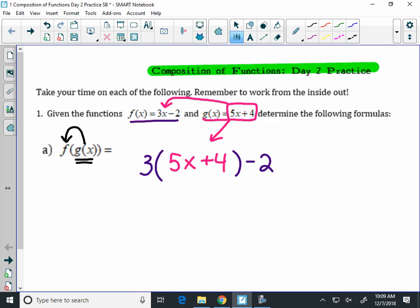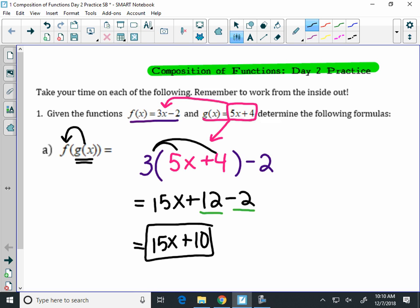Now all you have to do from here is simplify the expression by distributing the 3 to give you 15x plus 12, minus 2, and then combining like terms. This simplifies to 15x plus 10. And that is your final answer. That is the new equation you get from f and g called f of g of x.